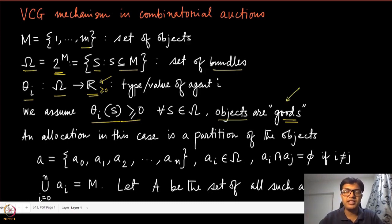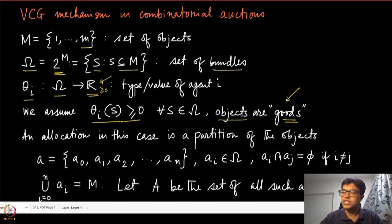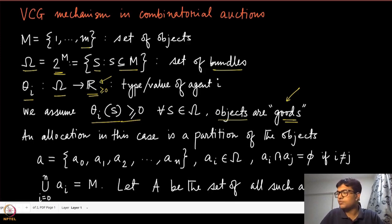Contrast this with objects called 'bads' — if such an object, like some task, is allocated to you, it is costly and gives you negative valuation rather than positive. We are excluding that kind of setting from our discussion of combinatorial auctions.